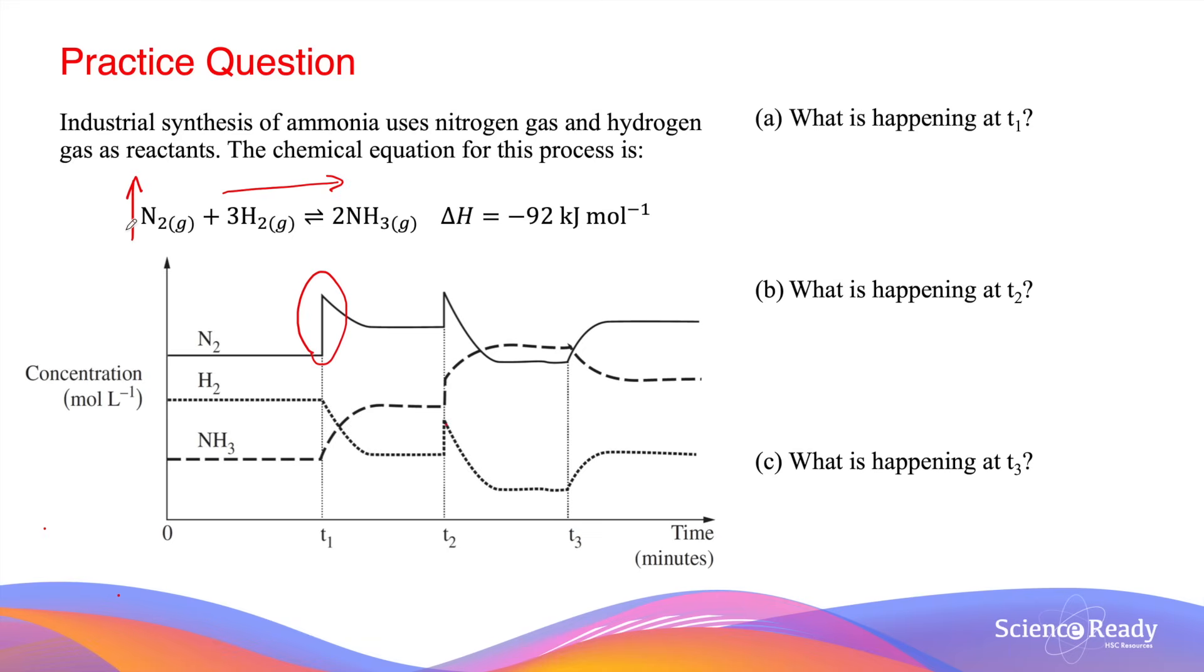not only does the nitrogen concentration decrease, so does the hydrogen gas concentration. And at the same time, the ammonia concentration increases. This is exactly what we see right after T1.